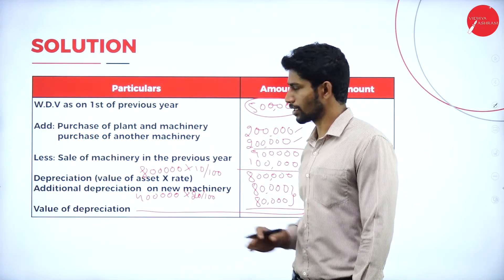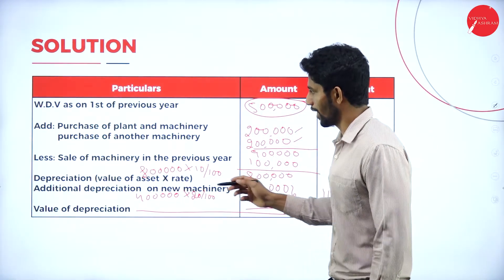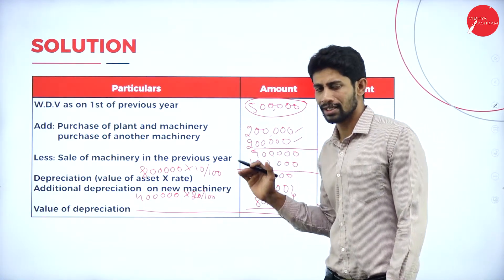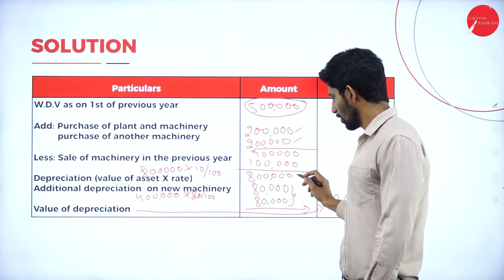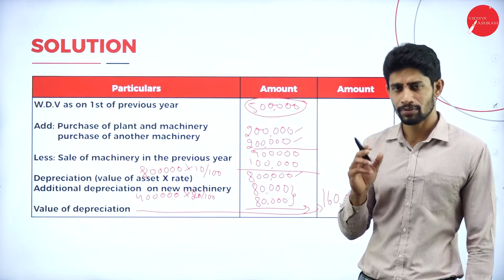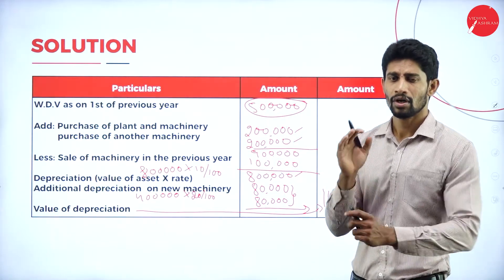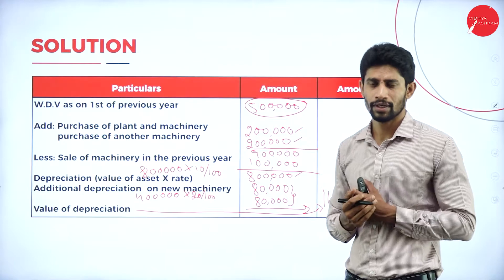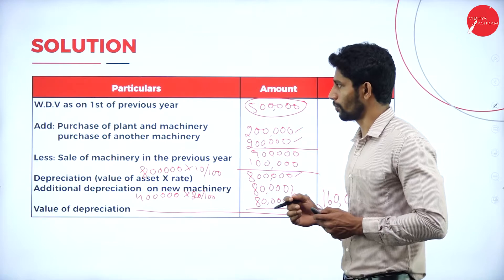To summarize: first take the written down value of the asset, add any purchase with respect to that asset, deduct the sale in the previous year, and on the resulting balance, calculate the rate of depreciation. If the rate is not given, you must know the applicable rate for each asset. Additional depreciation should be given only on plant and machinery.